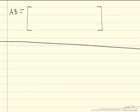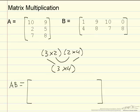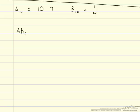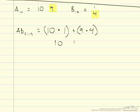Each element of the new matrix is calculated individually. To calculate element (1,1) — this first spot — you use the first row of A and the first column of B. The first row of A equals [10, 9] and the first column of B equals [1, 4]. So for element (1,1), we calculate 10 times 1 plus 9 times 4, which is 10 plus 36, equaling 46.